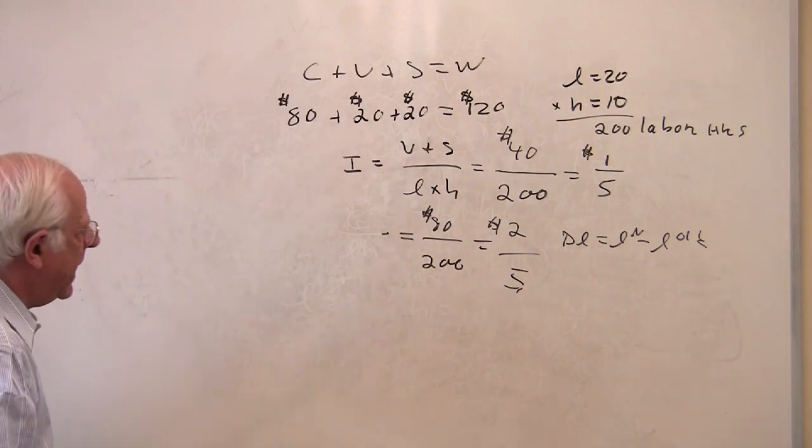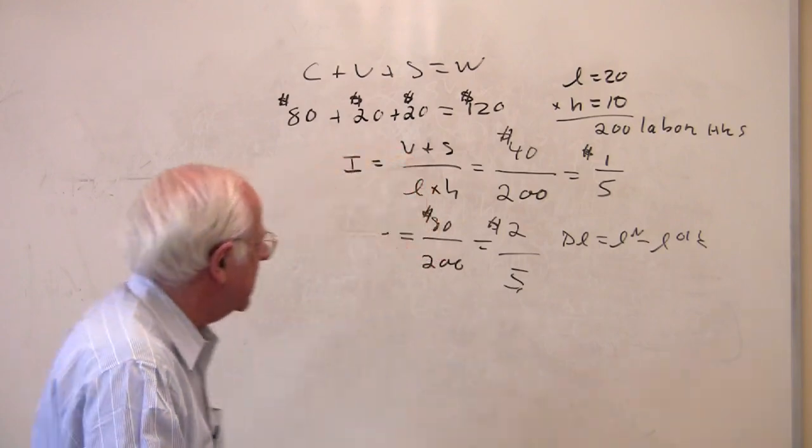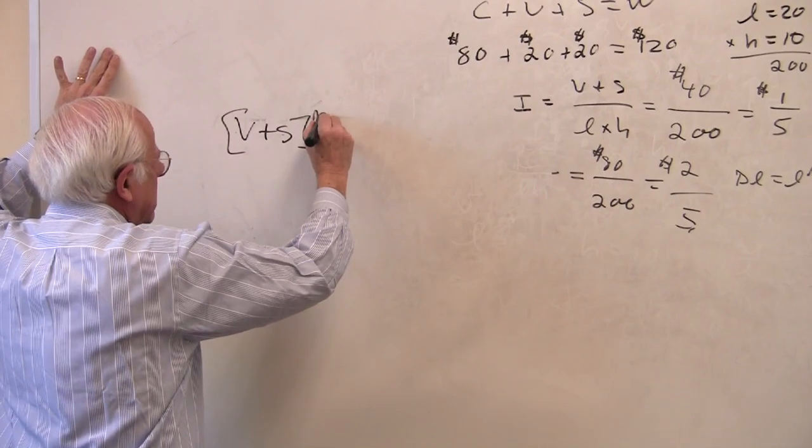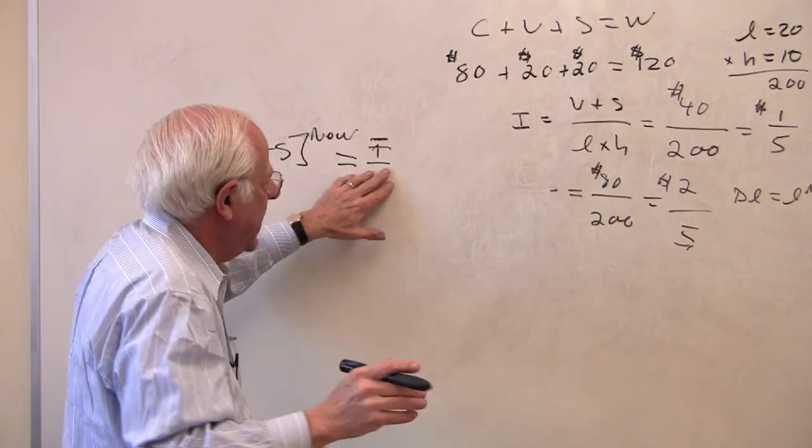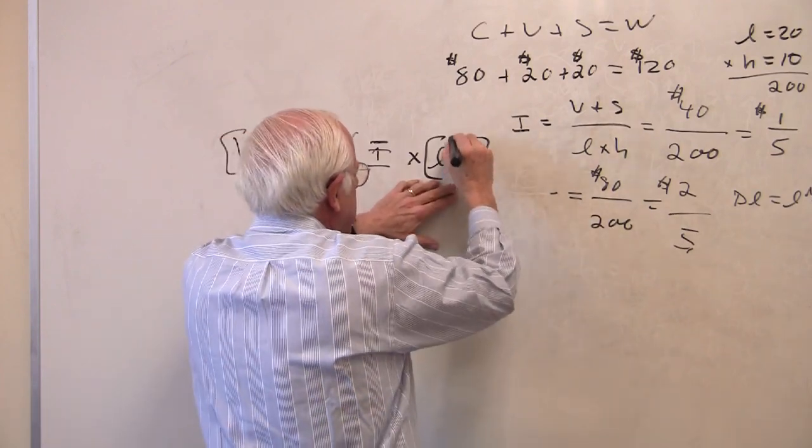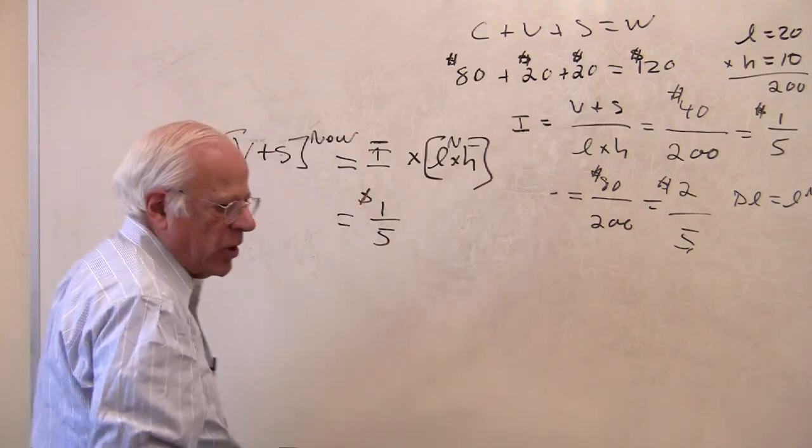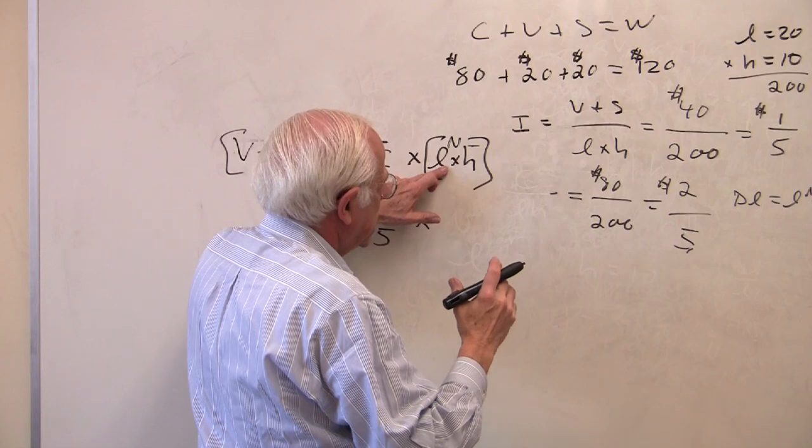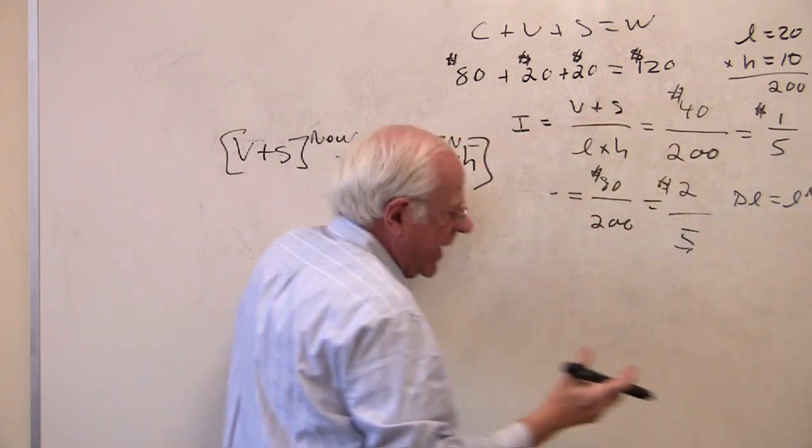And the question is, if we have now 30 workers, how much new value do those workers add if they're working the same hours of 10? Well, we have this formula. If I assume that the I remains unchanged, so the intensity, it could change, but if I assume for the moment it remains unchanged, then I have a new pool of labor hours. And this is new. The H remains the same by assumption. So I can plug in the numbers here. So this is 1/5, because I'm assuming there's no change in the intensity of labor. There's no speed up. It stays the same. But I now have L times H. This is 30 times 10. So I have now 300. The use value of labor power has grown. This is now 300.